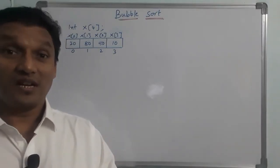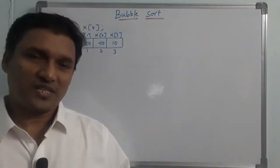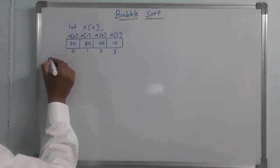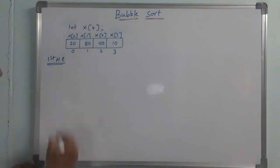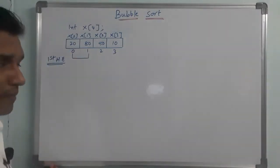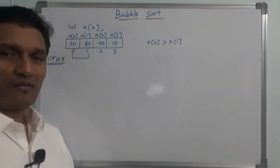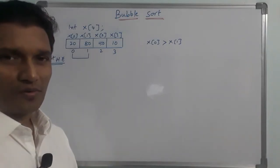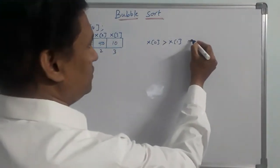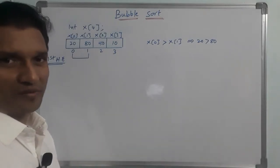The bubble sort process first finds the highest element. We compare x[0] with x[1]. If x[0] is greater than x[1], we interchange them. Here, x[0] is 20. Is 20 greater than 80? The condition is false, so we do not interchange — we leave them in order.